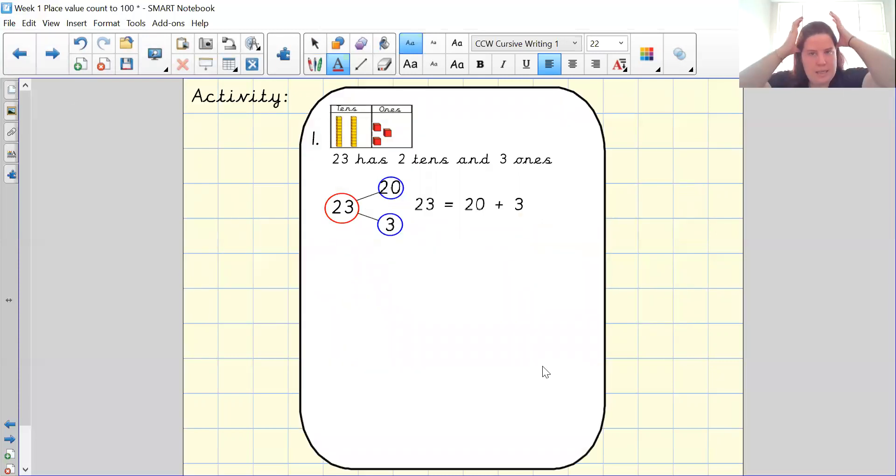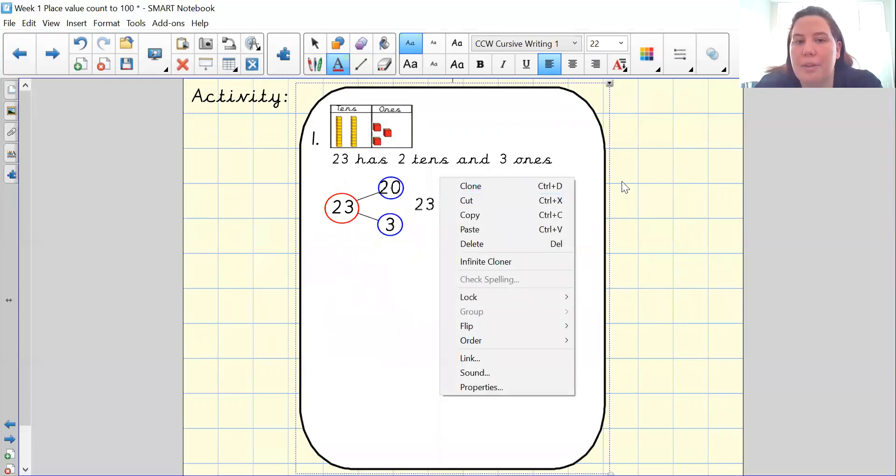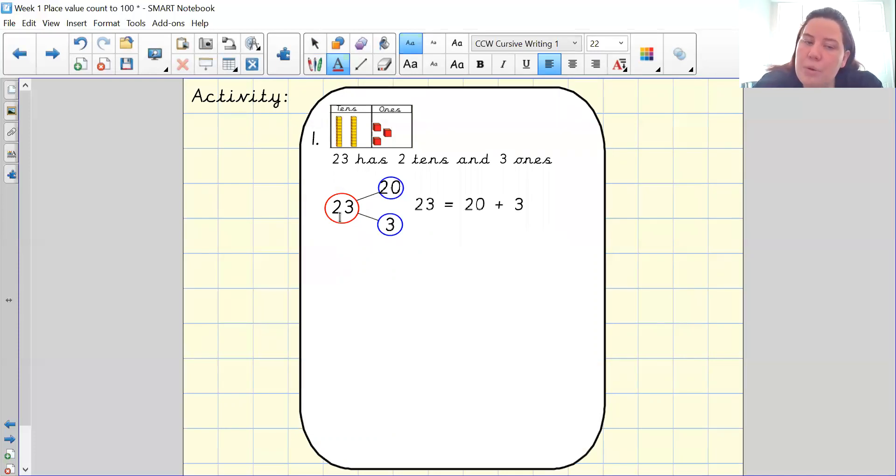So what I'm going to ask you to do now is you're going to get a piece of paper and you are going to draw it onto your piece of paper. So you will draw your place value grid and you will write the stem sentence. 23 has two tens and three ones, as you can see. And then underneath, you will represent it using numbers in your part whole models with your number sentence next door.